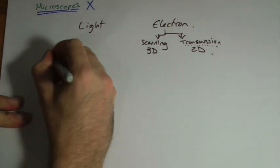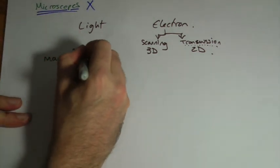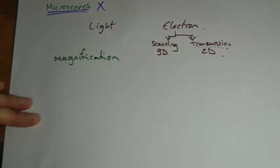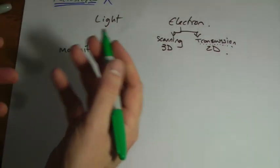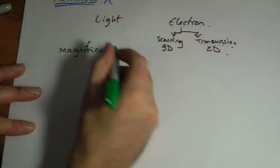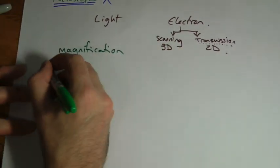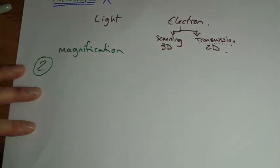First of all we'll do magnification. This is the bit that seems a bit more straightforward. Literally it just means how much bigger does your microscope make things look. With a light microscope, and all these by the way, remember the number 2. 2 is going to be our magic number.